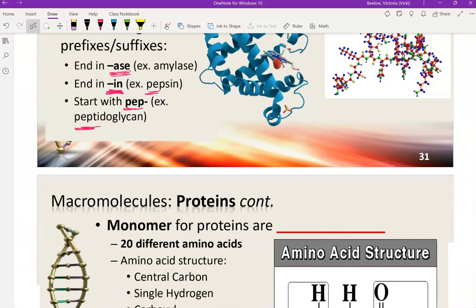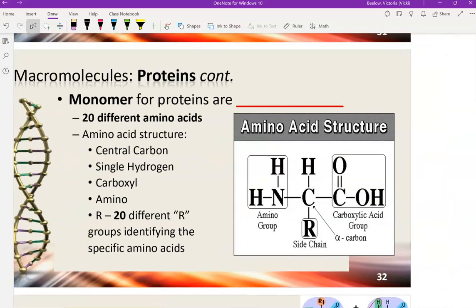So back to proteins. The monomer for carbs was a monosaccharide. The monomer for nucleic acids is nucleotide. The monomer for protein, so again, these are building blocks. You put these pieces together to create larger structures. The monomer for proteins are amino acids. If you've ever been to a health food store or have looked at health-related stuff, sometimes you see this come up. People take amino acids because they're the building blocks of proteins. And for humans, we have 20 different amino acids.